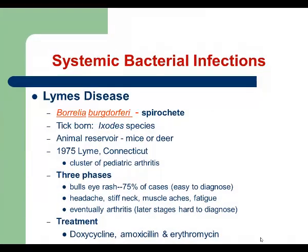We continue with Lyme disease. Lyme disease is caused by Borrelia burgdorferi, which is a spirochete. This infection is fairly new — it was discovered in 1975 in Lyme, Connecticut, when pediatricians suddenly had a lot of patients with arthritis that couldn't be explained. The source of infection will be animals, for example mice or deer. Infection is transmitted by ticks, which explains why we usually have a lot of outbreaks of Lyme disease in May and summer, when ticks are active.